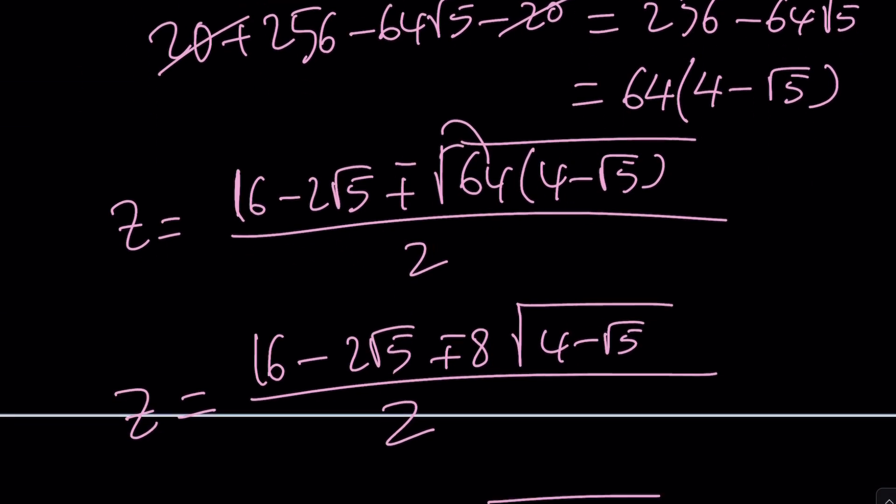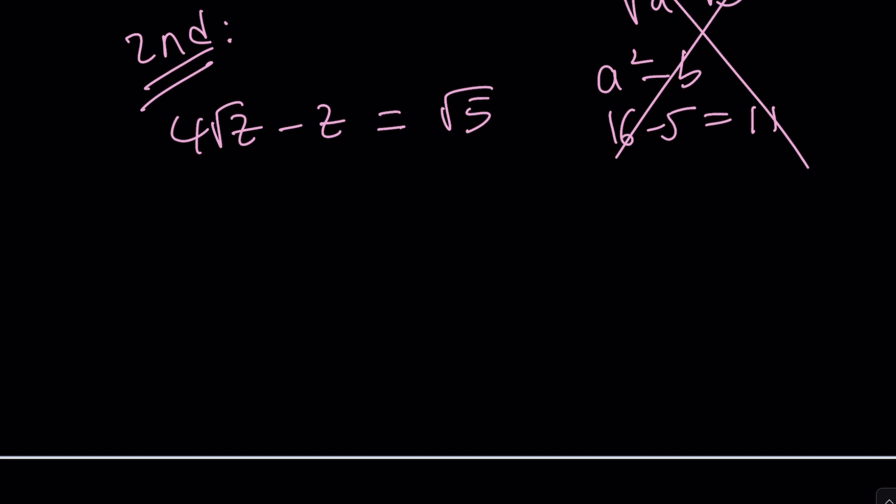4√z - z = √5, right? And then what we're going to do is we're going to solve this as a quadratic. But what I'd like to do is I want to replace √z with something. How about w? Then this becomes w². And then we get 4w - w² = √5. And then this becomes w² - 4w + √5 = 0, right?